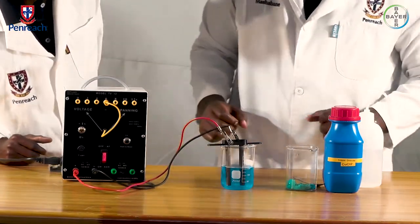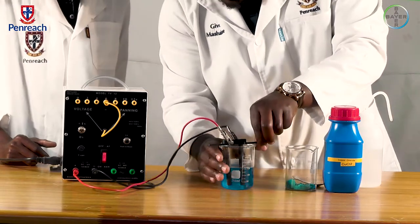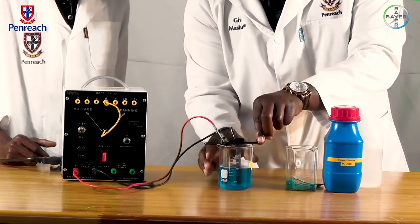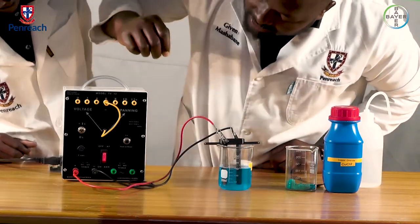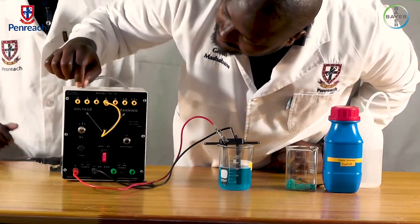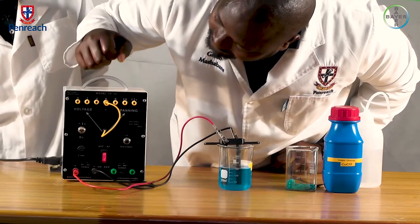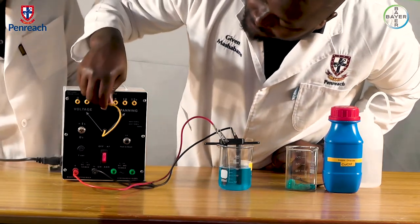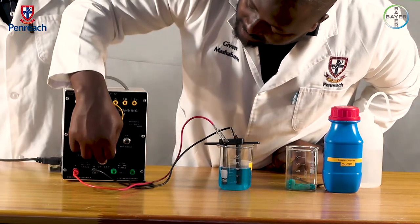Right. Now, the connection is ready. We can now switch on. We are going to start with the smallest, say, halfway six volt, and then switch on.